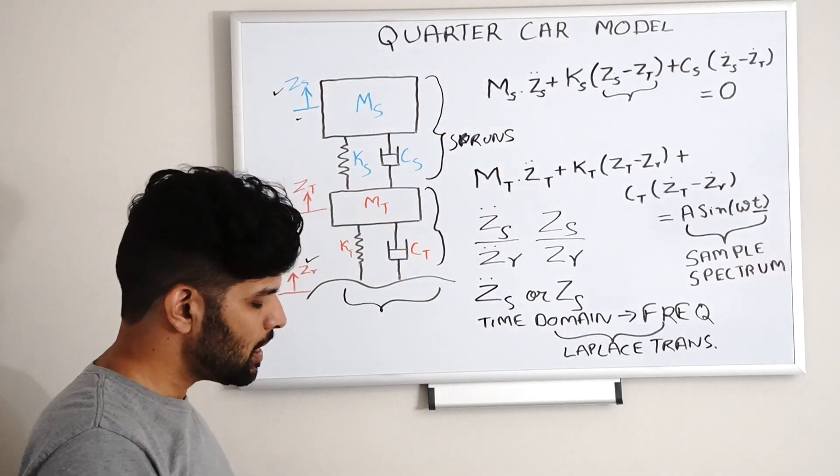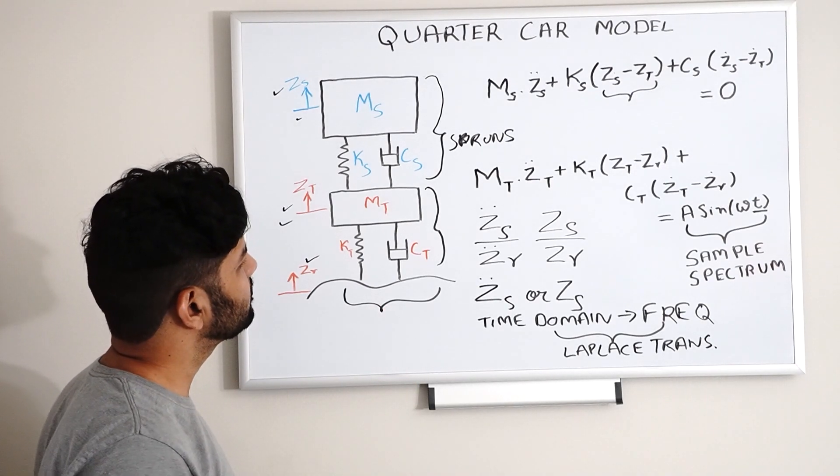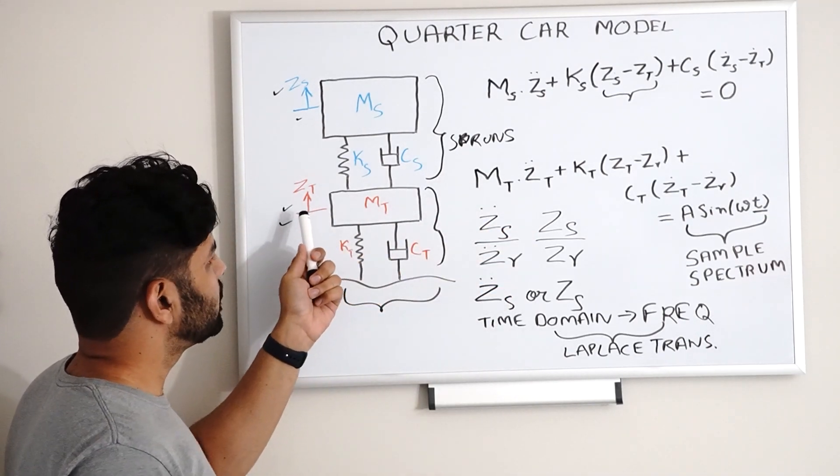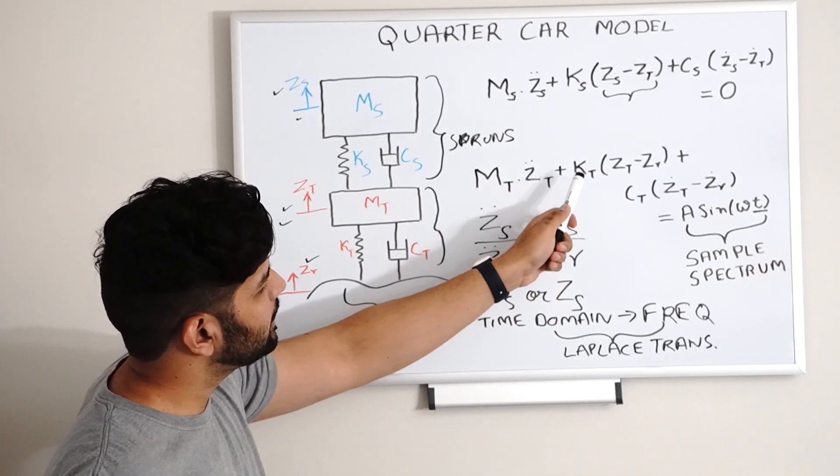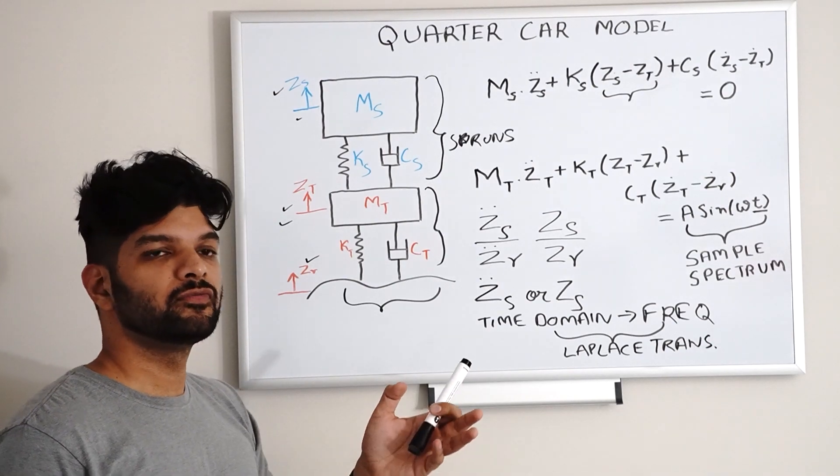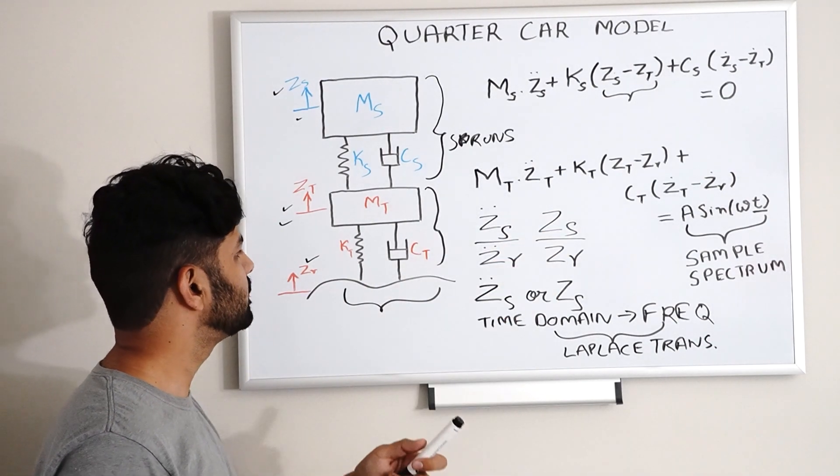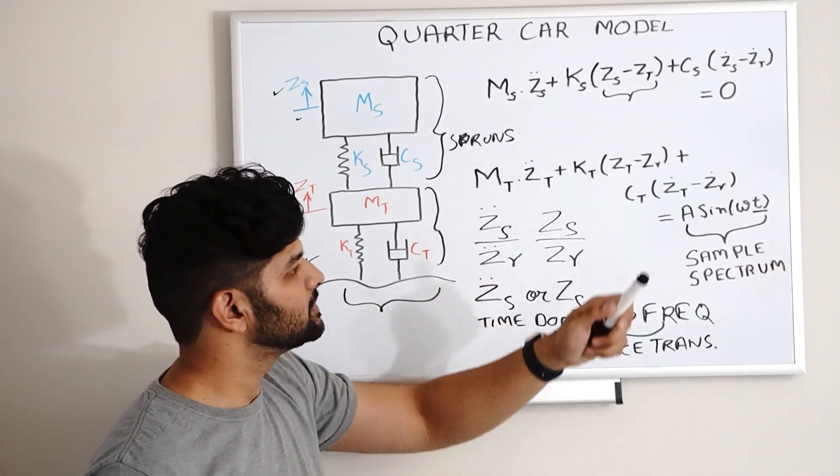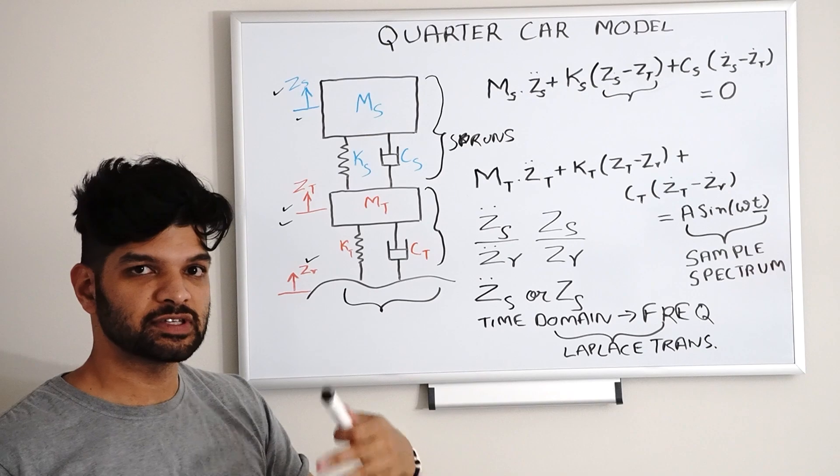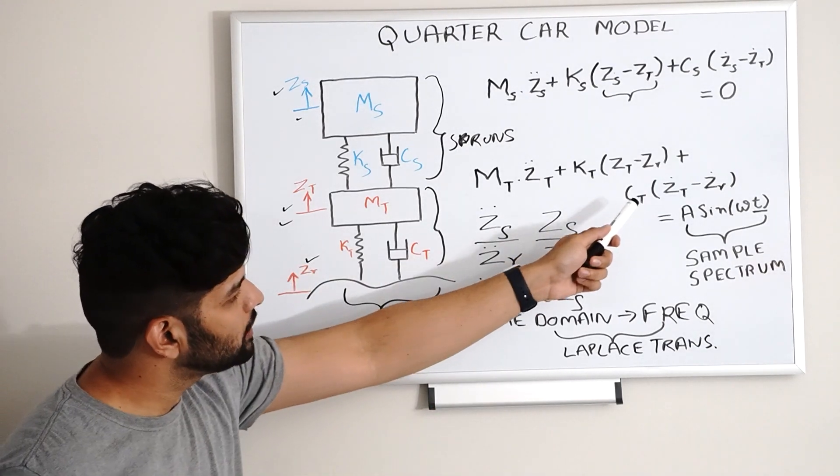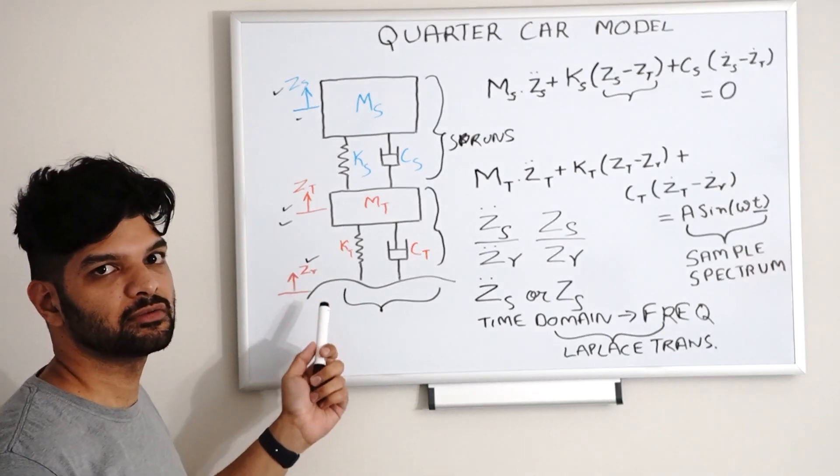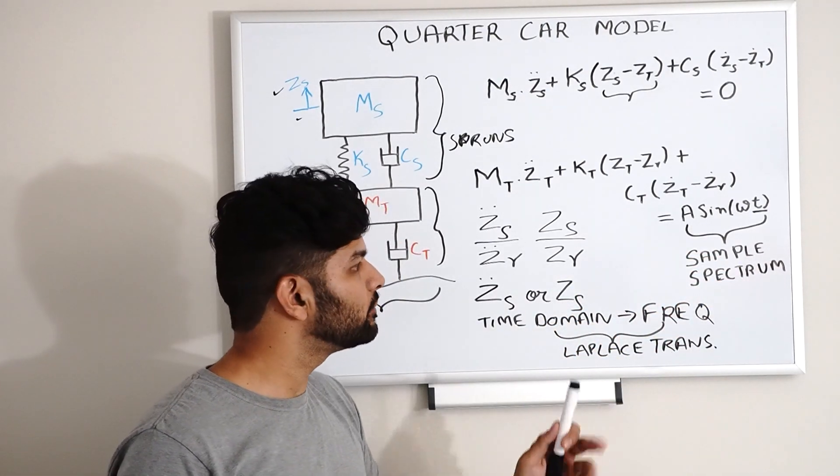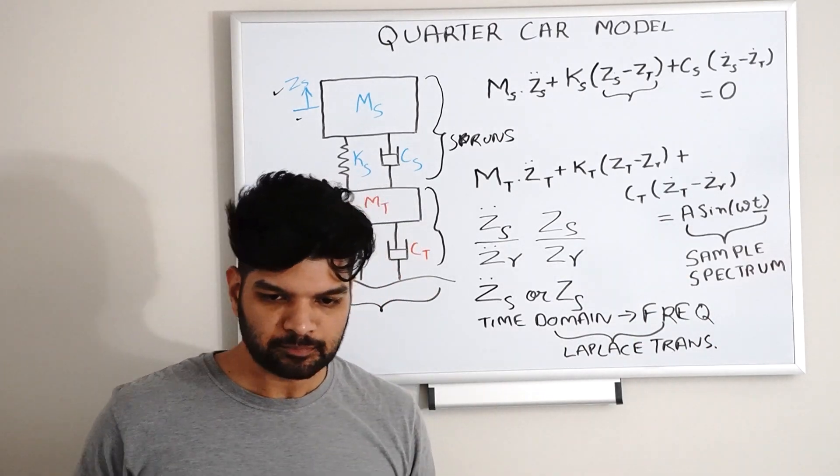For the second part, the lower part over here, what we see is, again, the same thing applies. You have mass of the tire times acceleration of the vertical movement, so ZT double dot, plus KT, that is the tire rate or stiffness of the tire. Again, the force generated with that stiffness depends on the difference between the vertical movement of the tire and the road, so it's ZT minus ZR, plus the damping coefficient of the tire because of its inherent properties. You have to multiply it by the velocity component again, which depends on the difference between the vertical deflection of the tire and the road spectrum. For example, in this equation, I have given or have taken it in the form of sine(ωt).